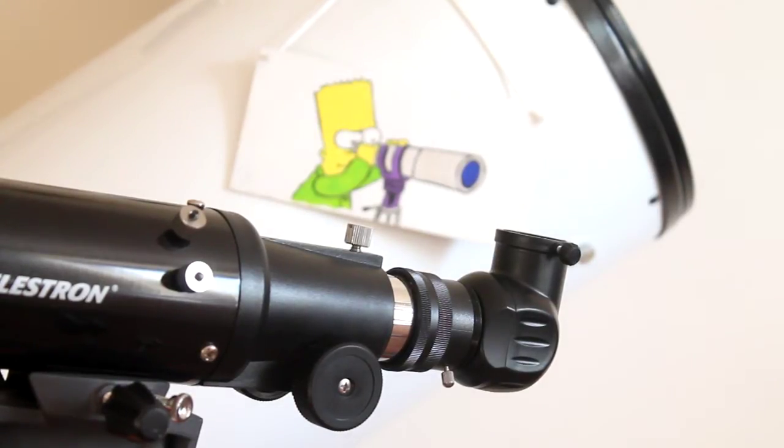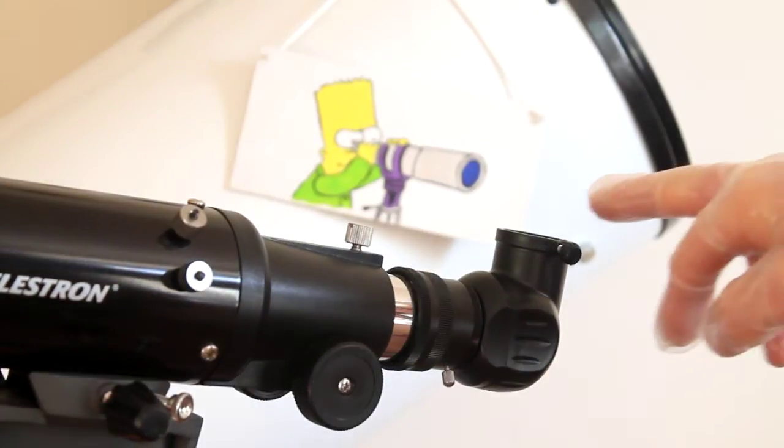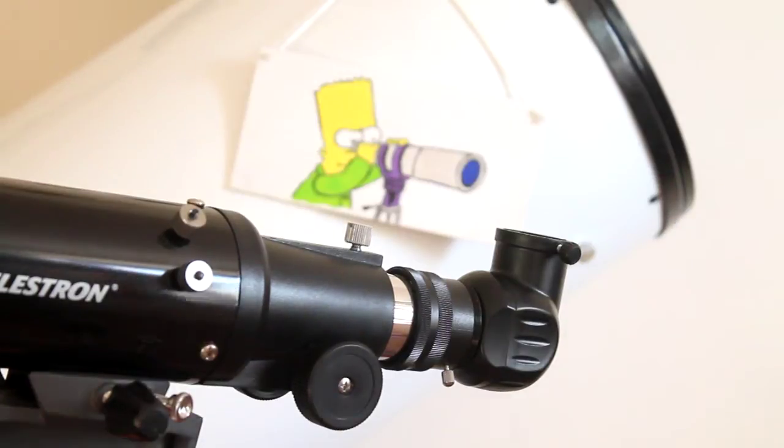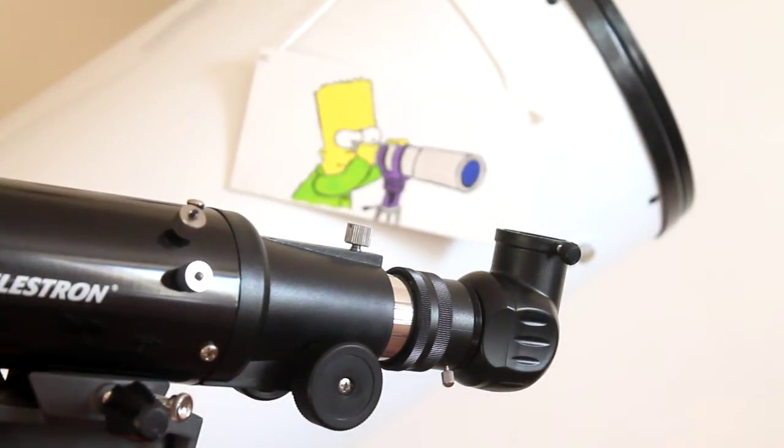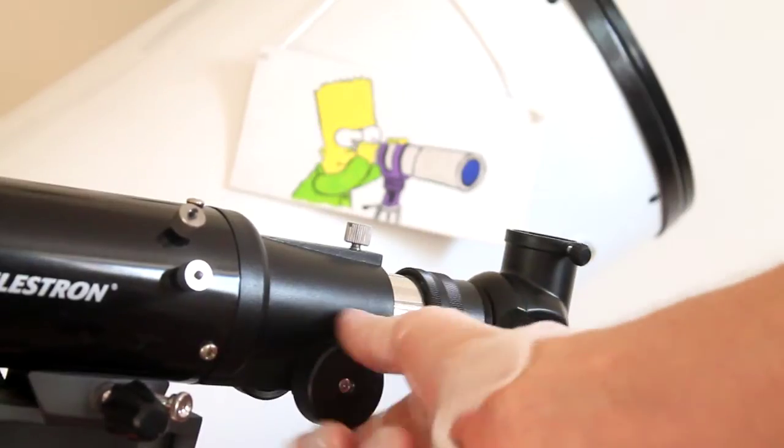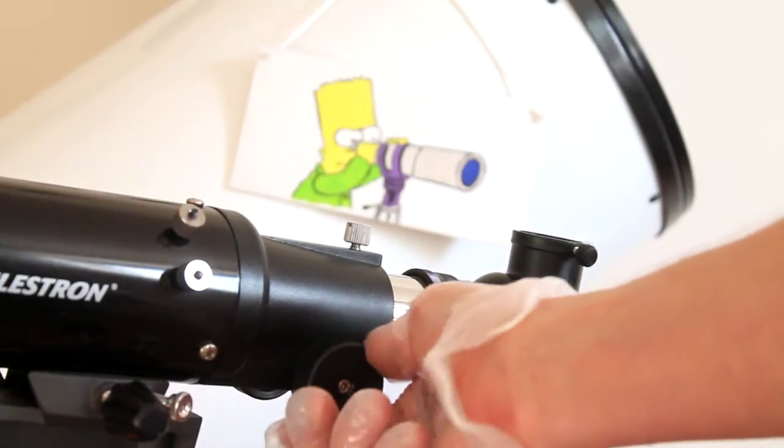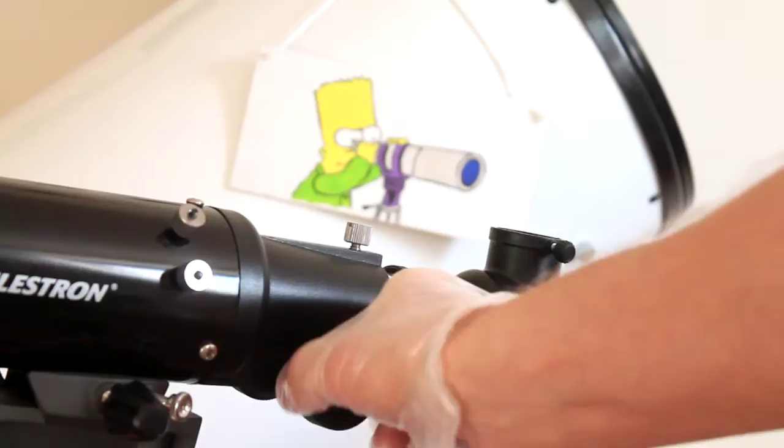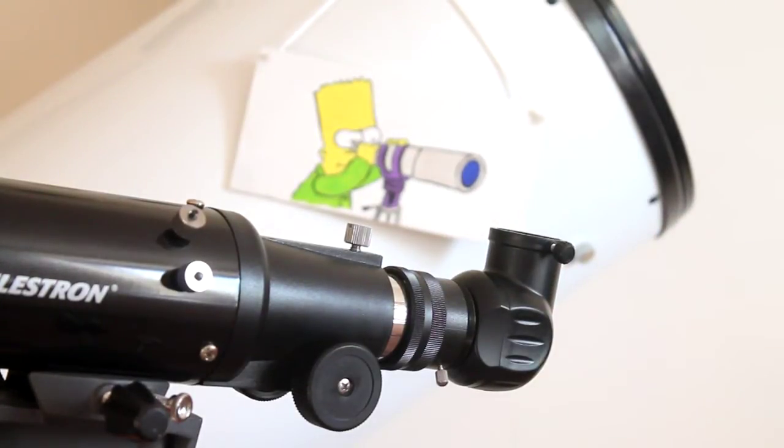Now this particular telescope is a travel scope, but I found with this one there's no such issue. It's just here to demonstrate. What we have here is the 90-degree prism diagonal that you get with the Powerseeker 80 short tube. You can put your eyepiece in there and it's very easy to focus and use, especially with a low-power eyepiece.